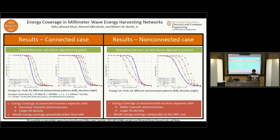On the right, for a given antenna beam pattern, we have plotted the energy coverage probability versus the base station density. As expected, the energy coverage probability increases with the base station density. This was for the connected case where we assume that a receiver is already aligned with a base station. We also considered the non-connected case where no such beam alignment is assumed.